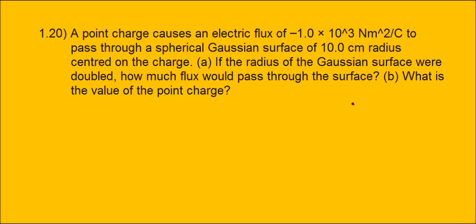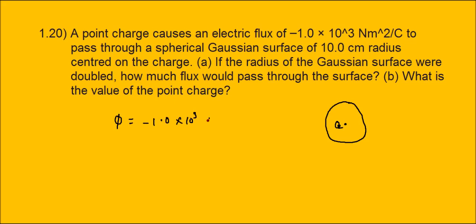A point charge Q is placed at the center of a spherical Gaussian surface. The electric flux through this spherical Gaussian surface, phi, is given as minus 1.0 × 10³ Newton meter squared per coulomb.